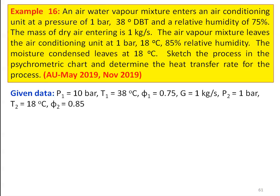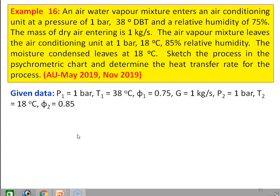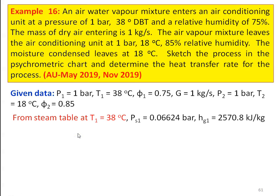The given data: P1 equal to 1 bar, T1 equal to 38 degree Celsius, relative humidity φ1 equal to 0.75. The mass of air Ma equal to 1 kilogram per second, P2 equal to 1 bar, T2 equal to 18 degree Celsius, and φ2 equal to 0.85. From the steam table at T1 equal to 38 degree Celsius, the saturation pressure PS1 equal to 0.06624 bar and the enthalpy HG1 equal to 2570.8 kilojoules per kilogram.